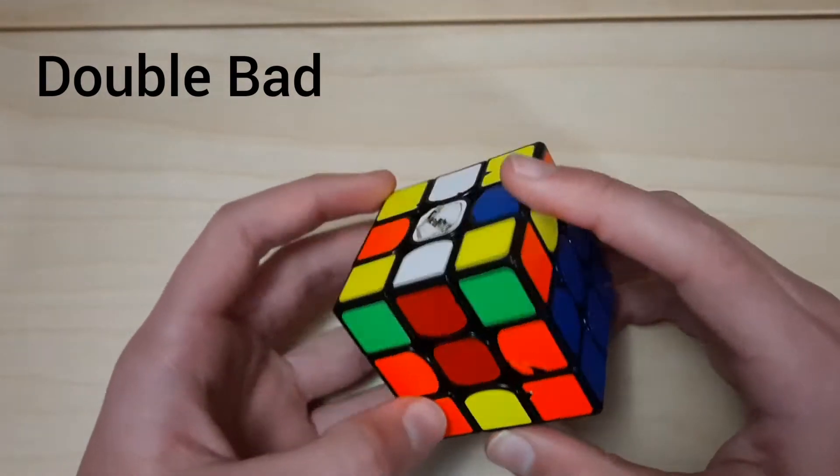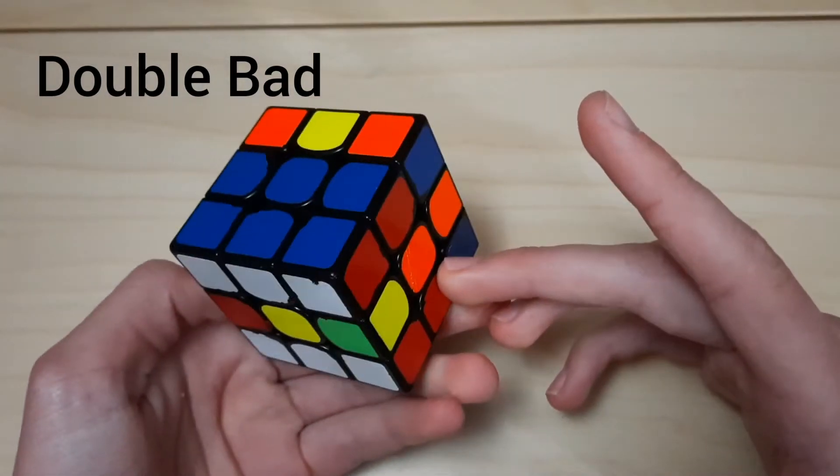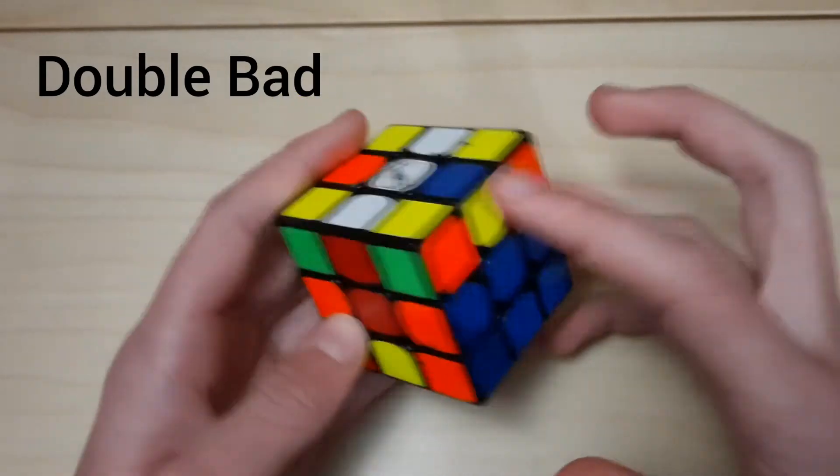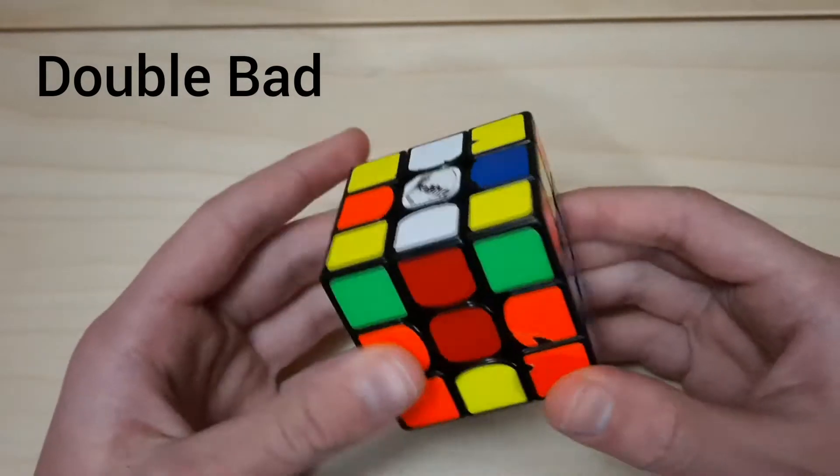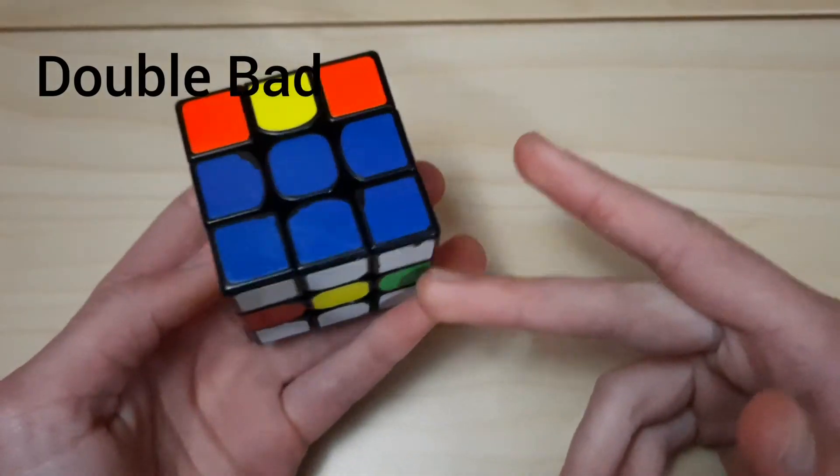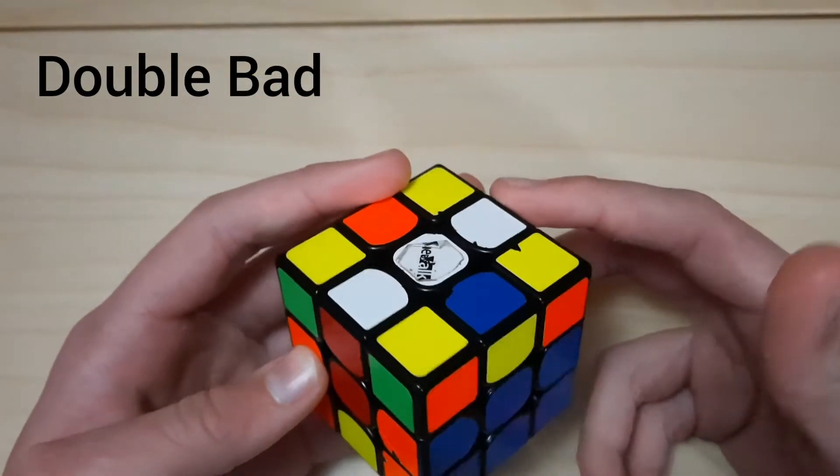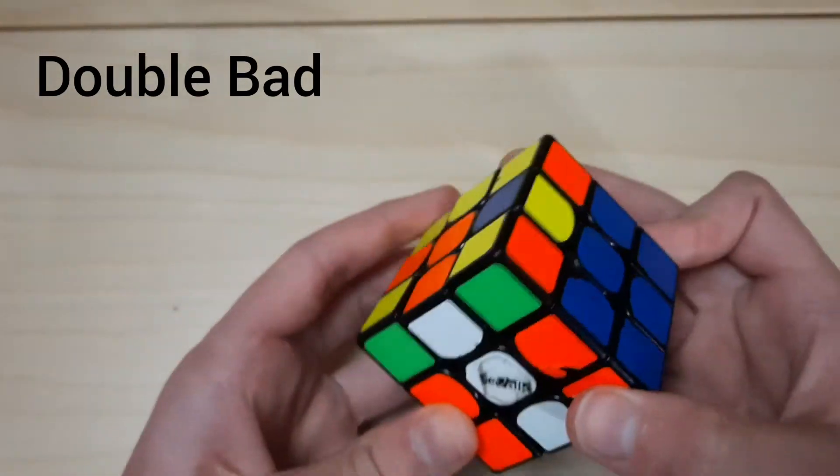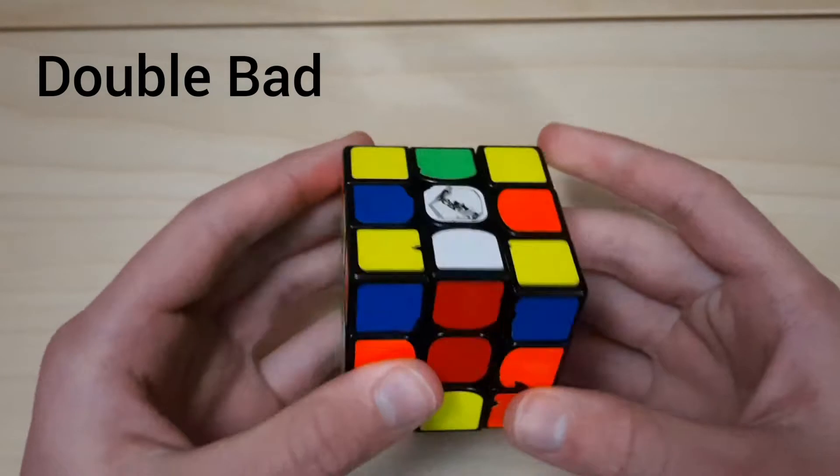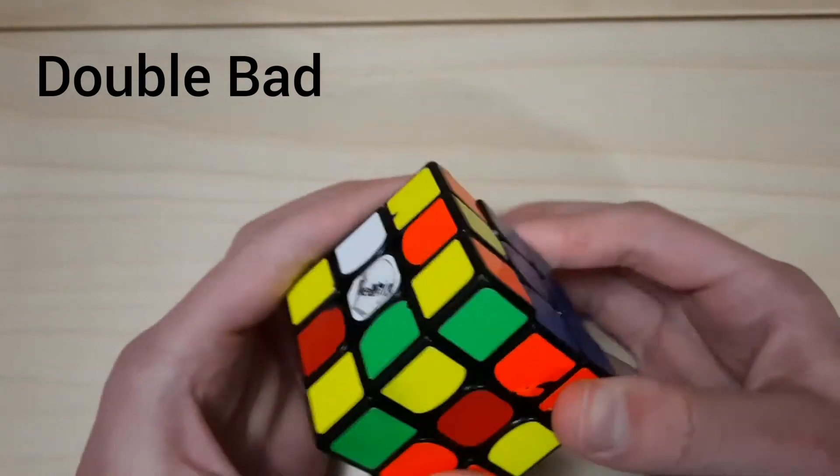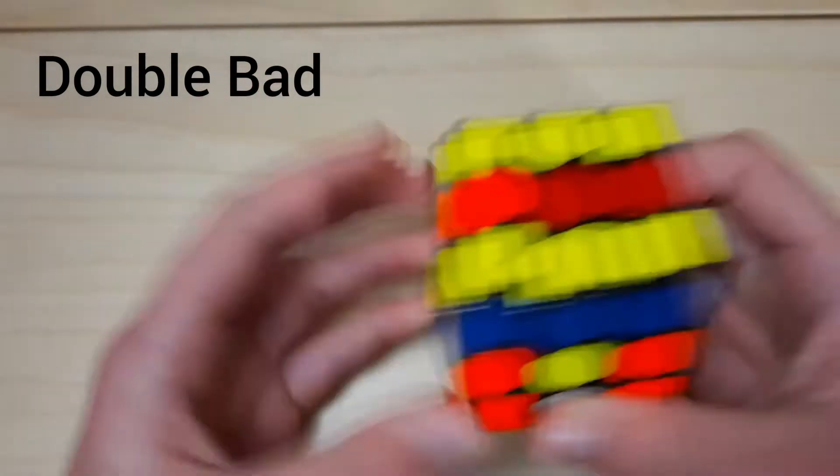And here we have them in both layers, and this is not a good case. We have one here and one here. Basically, what you do for this case is you set up to a mediocre arrow. So we're going to bring this bad LR edge into the top layer to become the tip of the arrow, doing an M U2 M' like so. And then we have a mediocre arrow and we can solve from there.